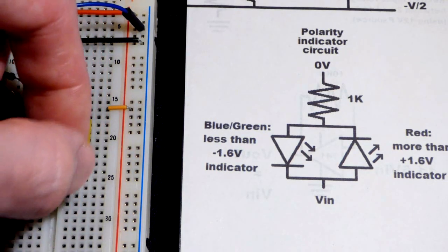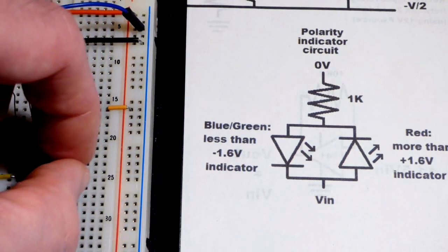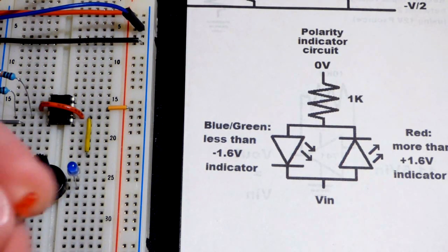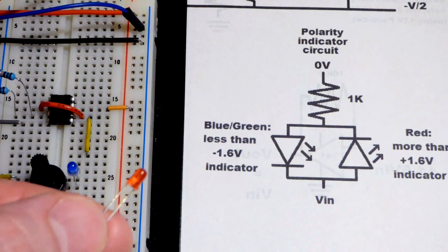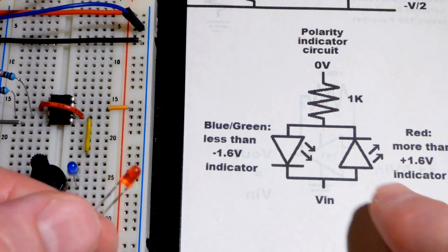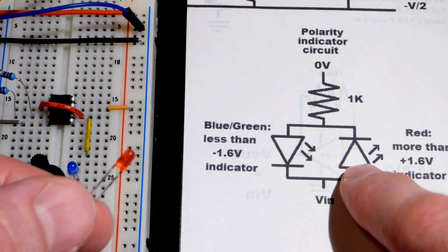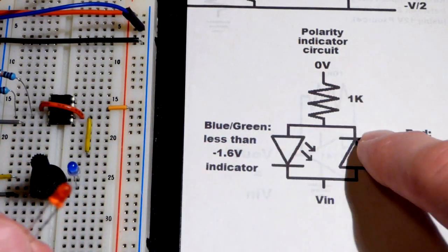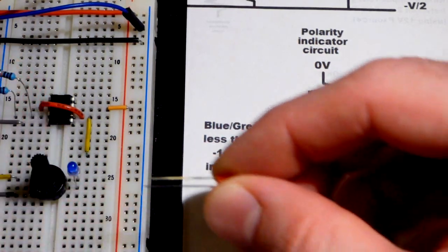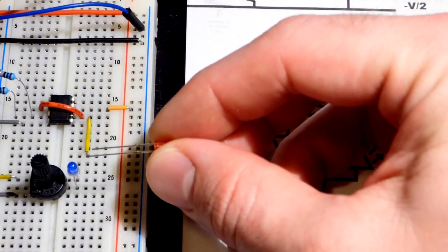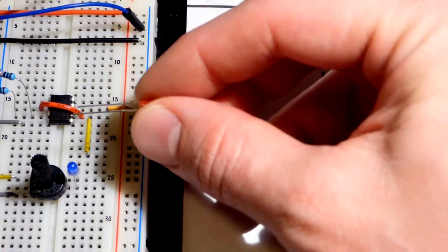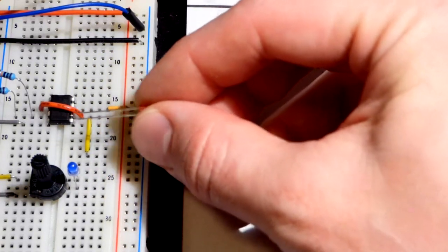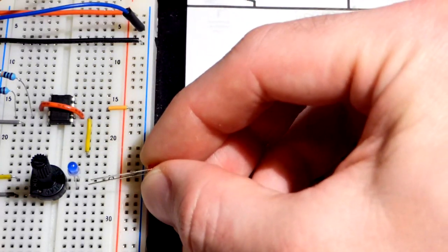The red LED we want it to light up in the opposite direction. We want it to light up when the input is more positive than our ground right there. So we're gonna put the cathode towards the jumper there that goes to the output of our trim pot or zero volt reference point or our 741 op-amp.